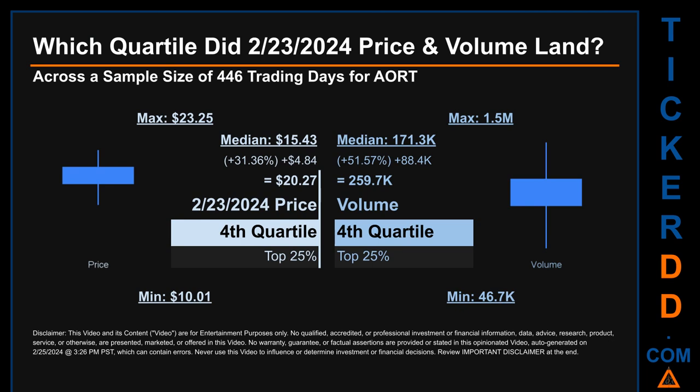Quartiles tell us about the spread of a dataset by breaking it into quarters, just like how the median breaks the set in half. AORT has a median price of $15.43; therefore, February 23rd's price was higher than that middle marker by 31.36%. The day's volume of 259.7 thousand was more than the median by 51.57%.